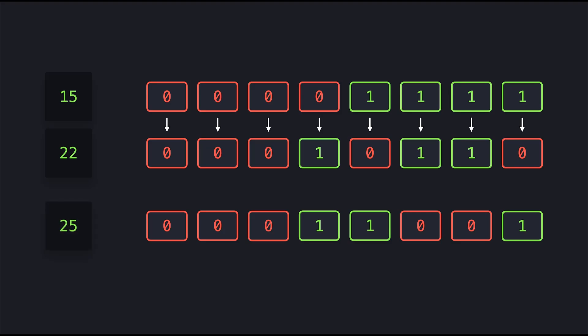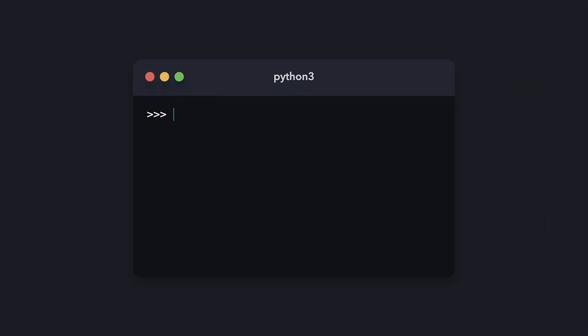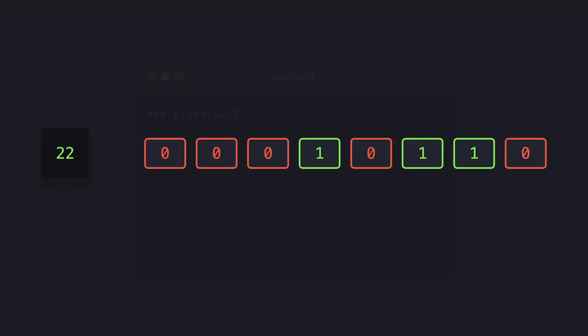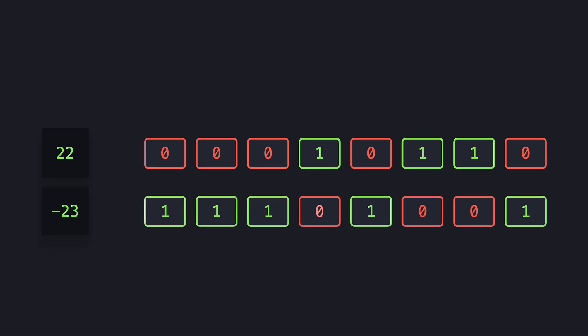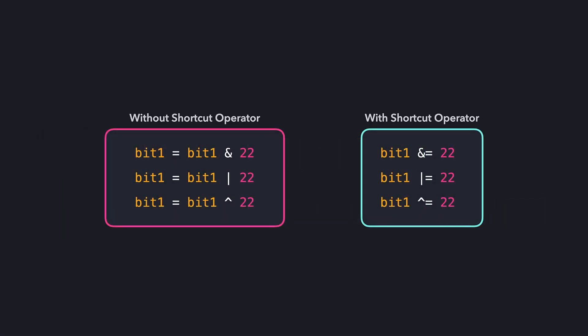Then there's the last bitwise operator that takes only one argument — the negation (~). The negation returns 1 for every 0 and 0 for every 1. These bits correspond to the integer minus 23. We can also abbreviate the bitwise operations to keep our code clean and concise.